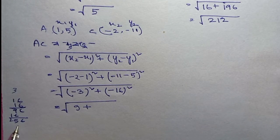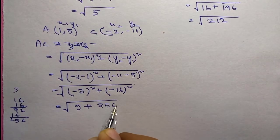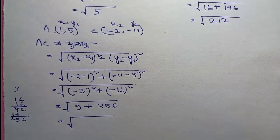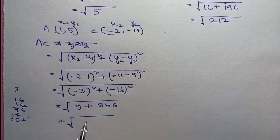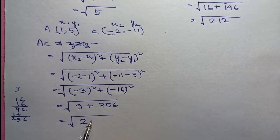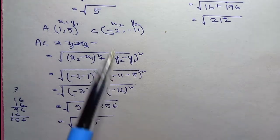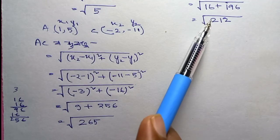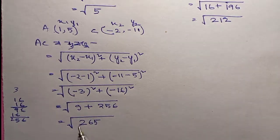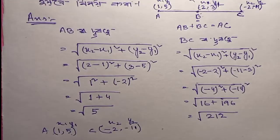So connecting the numbers: minus 3 whole square is 9, and minus 16 whole square is 256. Adding gives 265. So this number is 265, which gives root of 265.